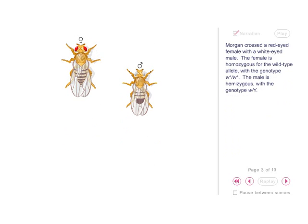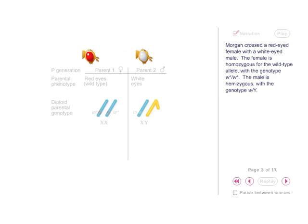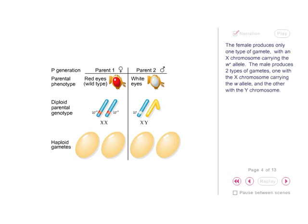Morgan crossed a red-eyed female with a white-eyed male. The female is homozygous for the wild-type allele, with the genotype W+, W+. The male is hemizygous, with the genotype W, Y. The female produces only one type of gamete, with an X chromosome carrying the W+ allele. The male produces two types of gametes: one with the X chromosome carrying the W allele, and the other with the Y chromosome.